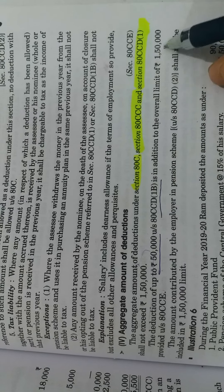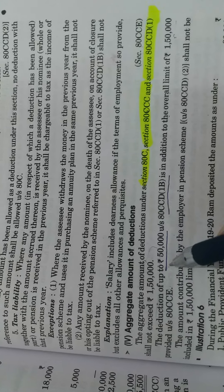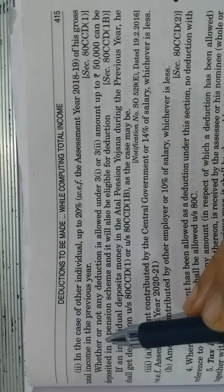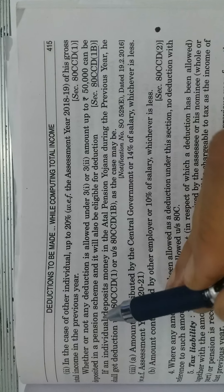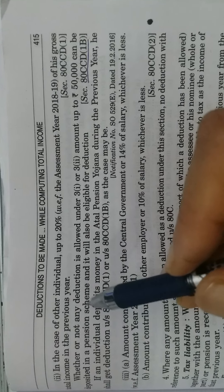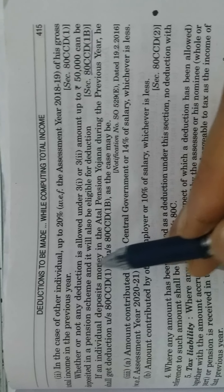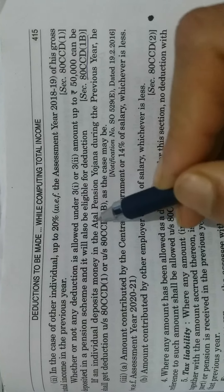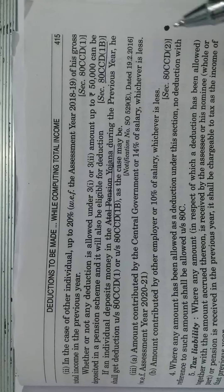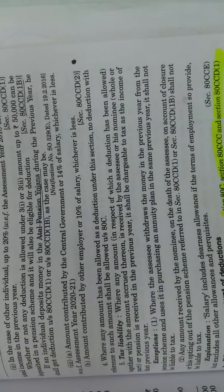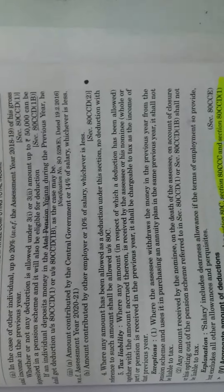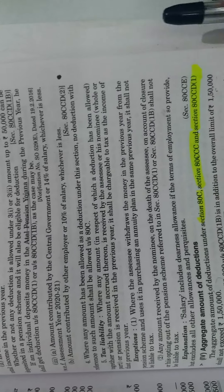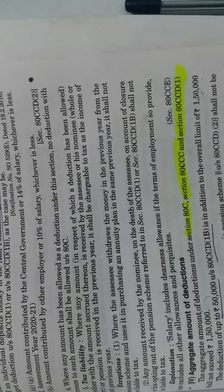Section 80CCD(1B) refers to the Atal Pension Yojana — a pension scheme of the Central Government. This ₹50,000 deduction is in addition to the ₹1,50,000 combined limit of 80C, 80CCC, and 80CCD. This concludes the first lecture. Please read all of this once, and we will continue with more deductions in the next lecture.